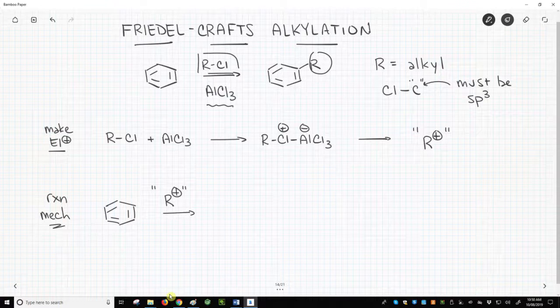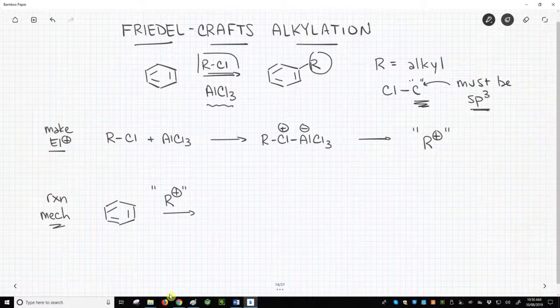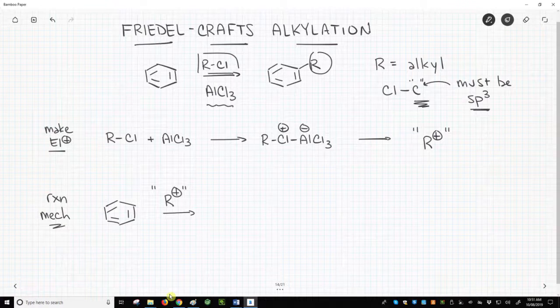The R group of the alkyl halide is substituted onto the ring. Alkyl halides are strictly molecules in which the halide is directly attached to an sp3-hybridized carbon. Other carbons in the molecule can be benzene rings or double bonds, but the carbon bearing the halogen must be sp3-hybridized.